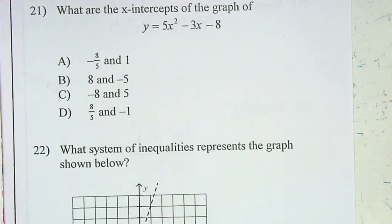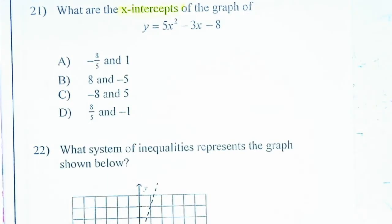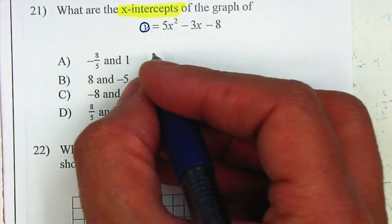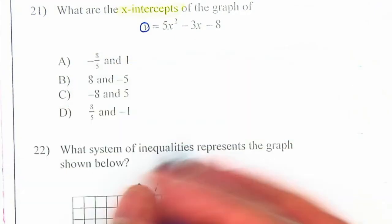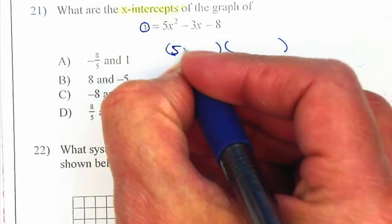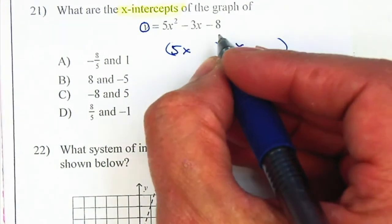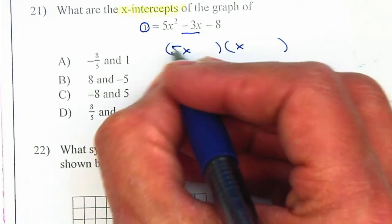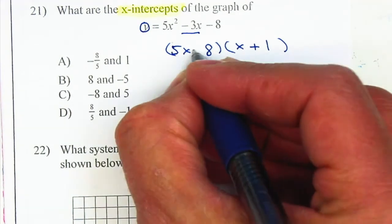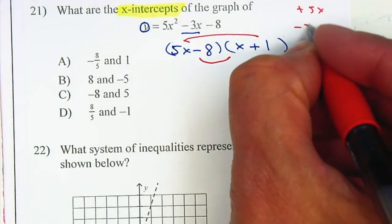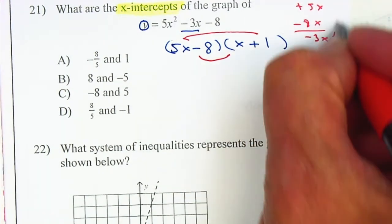Let's continue to problem number 21. What are the x-intercepts? We let y equal to 0. I need to solve for x. Just by looking at the answer, we know it's going to be easier to factor. Factors of 5x squared will be 5x and x. Factors of 8 will be 8 and 1, or 2 and 4. I need to end up with negative 3 once I FOIL, so I'll use 8 and 1 — making one positive and one negative — because that gives me positive 5x and negative 8x, which adds to negative 3x. That matches.